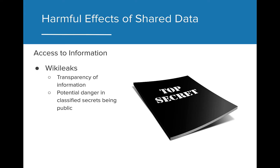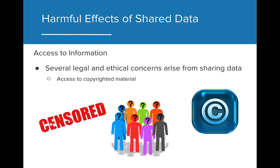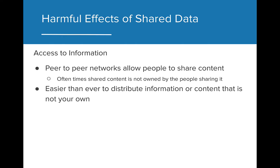Now let's talk about some of the harmful effects of shared data. There's a big question as to whether access to all information is actually a good thing. The website WikiLeaks posts classified information that either governments or corporations are trying to keep secret. On one hand, this promotes the transparency of information and prevents corporations and the government from keeping secrets from citizens. However, there's potential danger in having classified secrets made public. There are some legal and ethical concerns that arise when sharing data, including access to copyrighted material, anonymity, and censorship. Peer-to-peer networks allow people to share content or data they have on their computers — this is fine if the files are their own creation, but oftentimes shared content is not owned by the people sharing it. It's easier than ever to distribute content that is not your own, such as copyrighted works of art or copyrighted software.